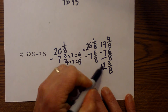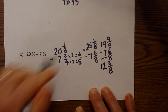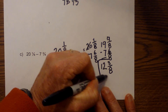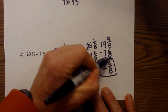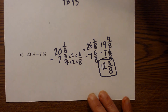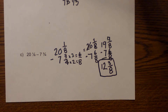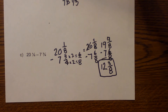That is already simplified, so twelve and three-eighths is your answer. That is subtracting mixed fractions by regrouping.